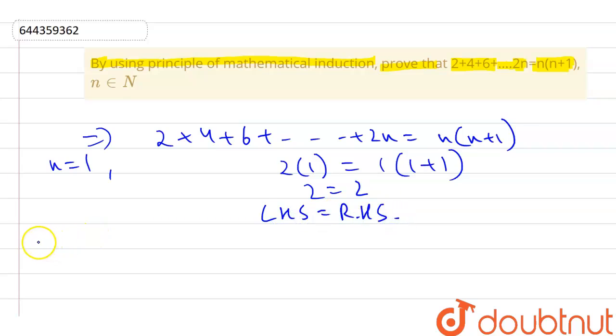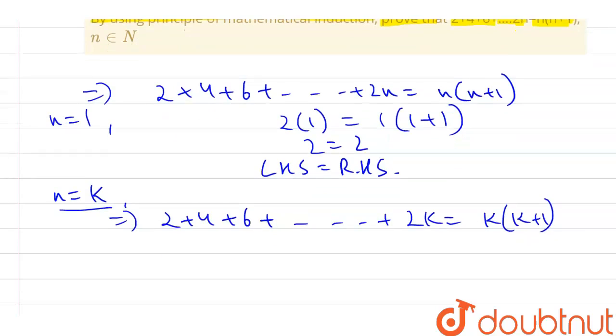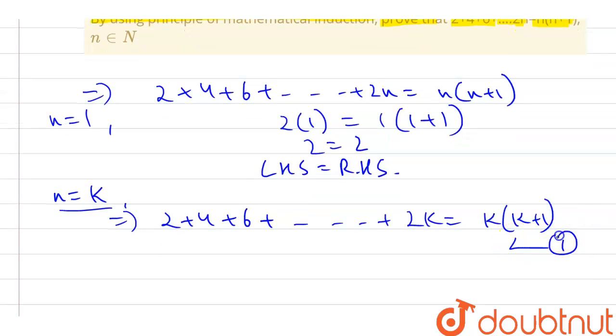Next step is putting n = k and assuming this is true for the equation. This gives 2 + 4 + 6 + ... + 2k = k(k+1). We'll call this equation 1.